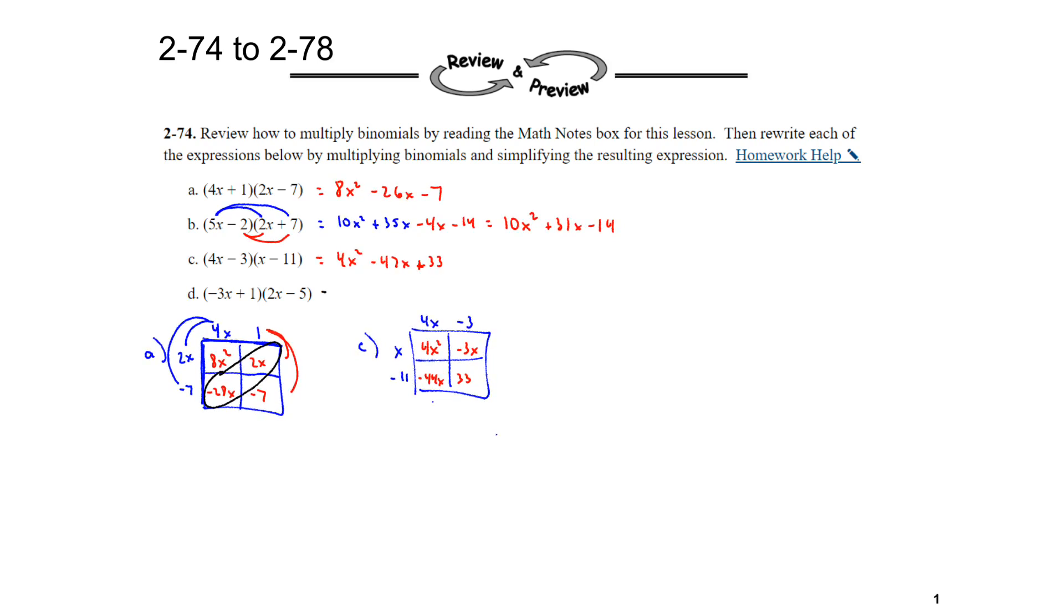And then for part D, I'll use without the area model. So negative 3x times 2x is negative 6x squared. Negative 3 times negative 5, make sure you see it as a negative times a negative, it's positive 15x. 1 times 2x is 2x. And then 1 times negative 5 is negative 5. Combine your like terms. Negative 6x squared plus 17x minus 5.